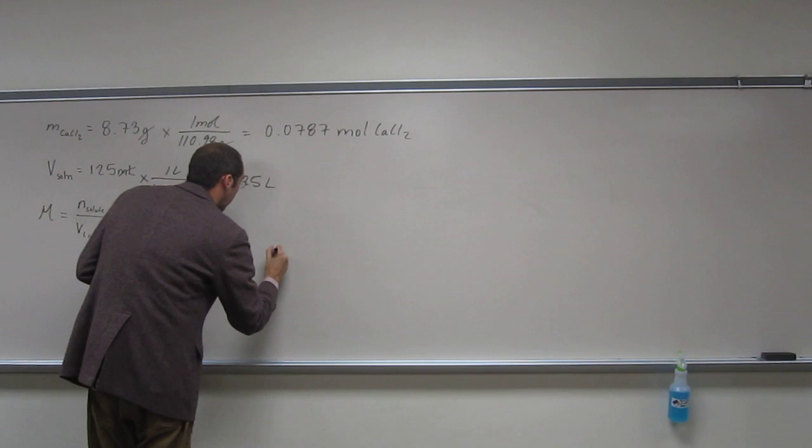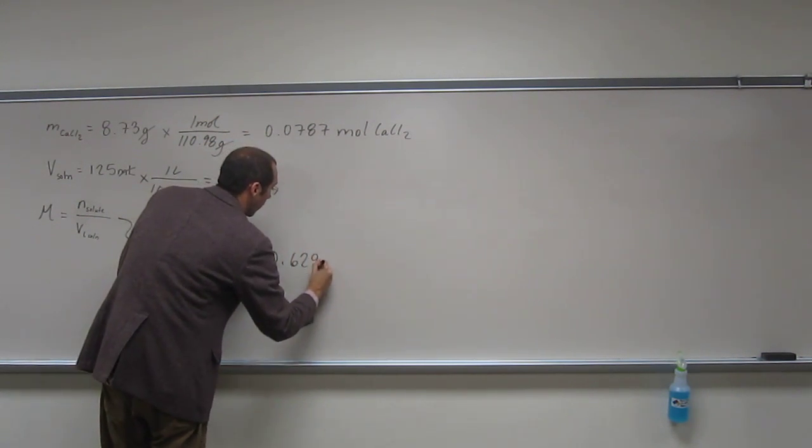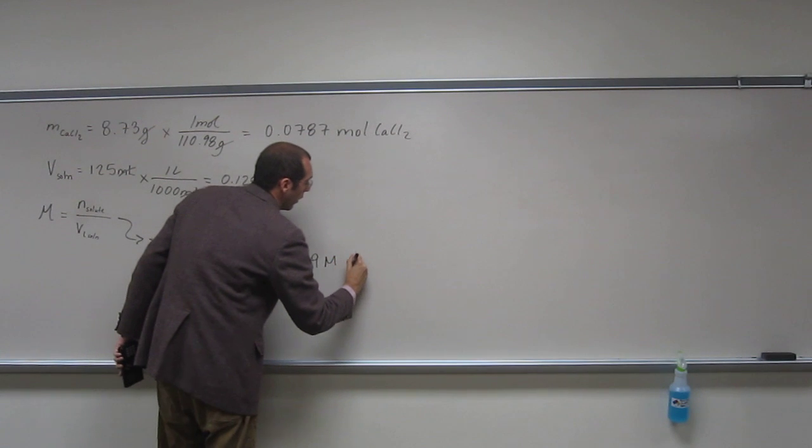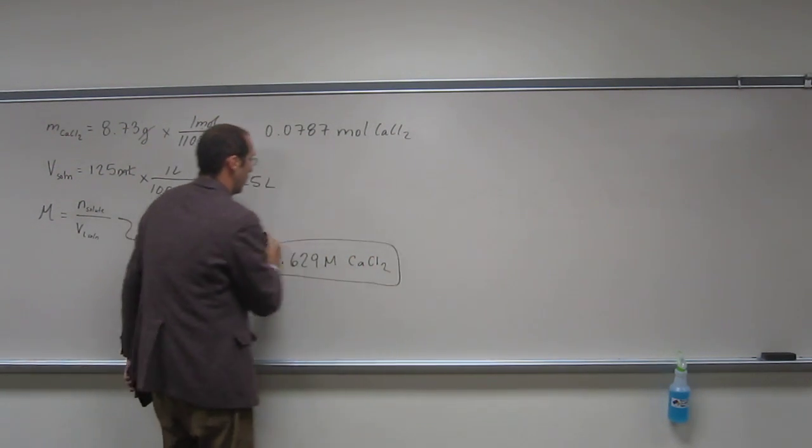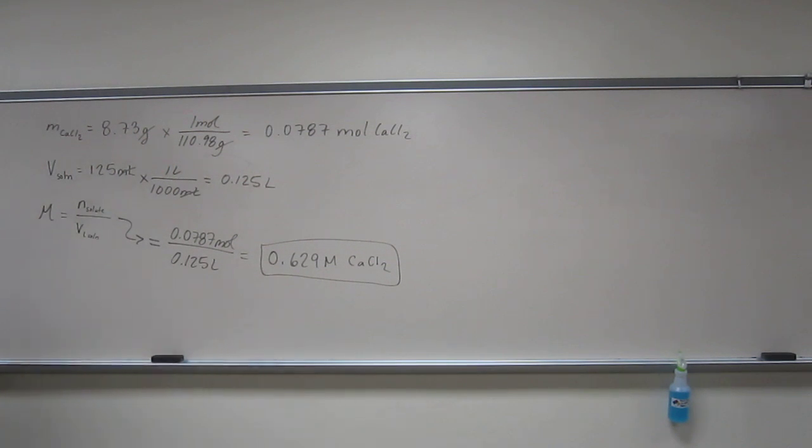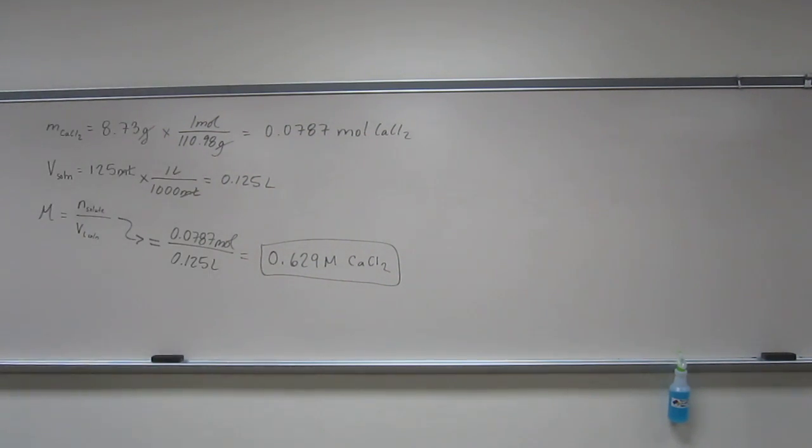And when I calculate it out, I get 0.629 molar calcium chloride. Any questions on that one? Again, pretty straightforward. I think that in this case, you just need to remember to use the molar mass as your conversion factor, and remember the formula for calcium chloride.